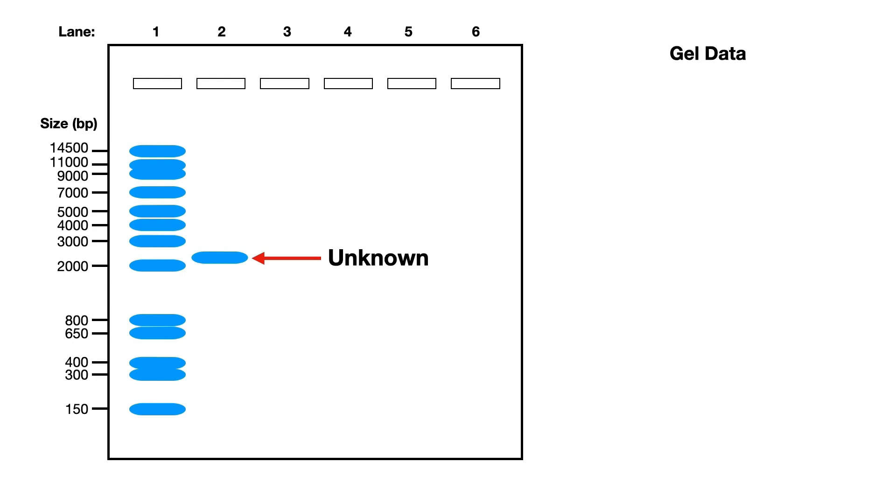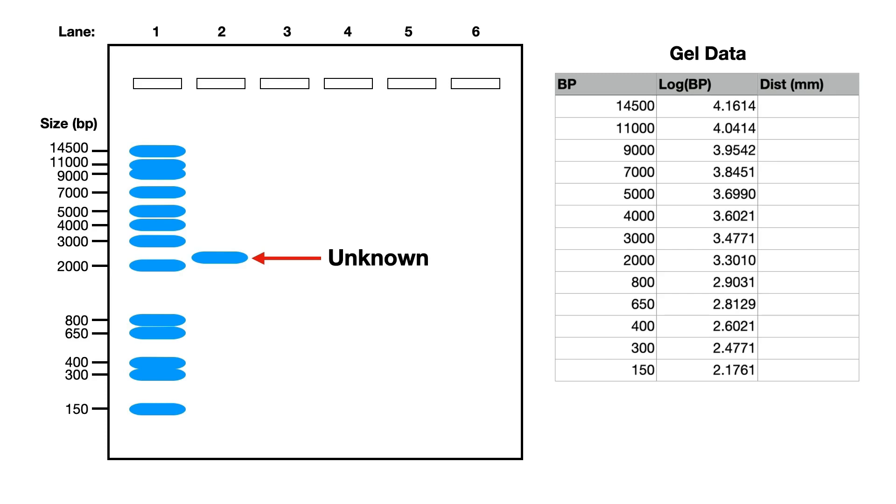So what we do as I explained in the other video is we create a table, we note down the base pair sizes, and then we work out the log of those base pair sizes. Next we do the measurements - we measure how far each band has moved from the well.